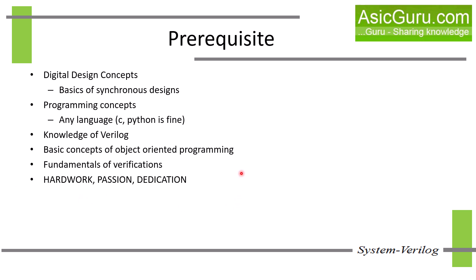Before we start the course, let's quickly go over the prerequisites. First, a solid grasp of digital design concepts is required, mainly the basics of synchronous designs like flip-flops, clocks and state machines. Next, some programming knowledge is expected — you don't need to be an expert; if you have used a language like C or Python, that is more than enough to get started. A working knowledge of Verilog is also required. Since SystemVerilog introduces object-oriented programming concepts, a basic understanding of OOP, like classes and inheritance, will be helpful.